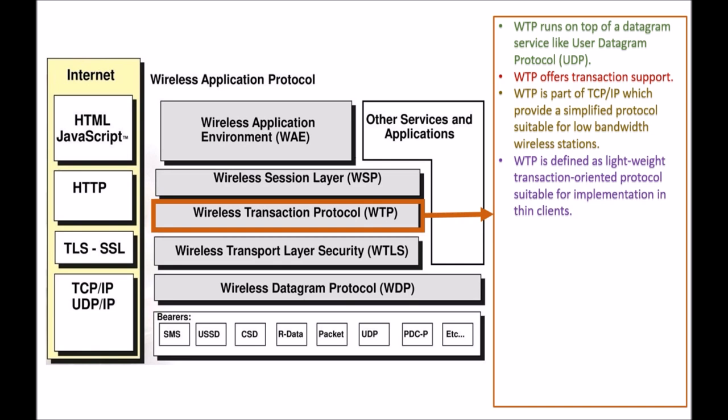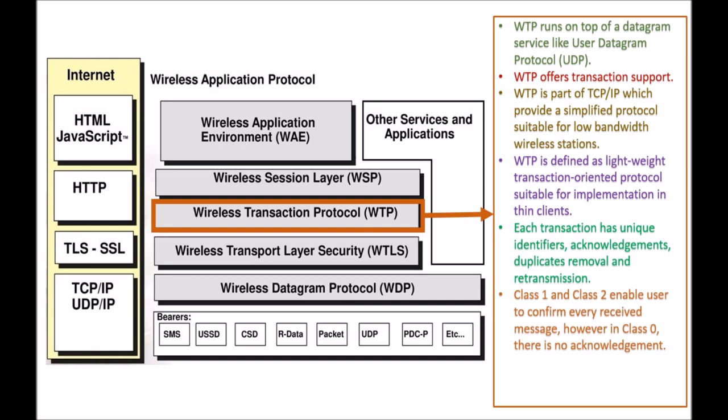WTP is defined as a lightweight transaction-oriented protocol suitable for implementation in thin clients. Each transaction has a unique identifier, acknowledgement, duplicate removal and retransmission. Class 1 and Class 2 enable the user to confirm every received message. However, in Class 0 there is no acknowledgement. WTP has no security mechanism and no explicit connection setup or tear down phases.